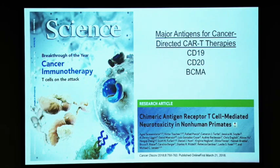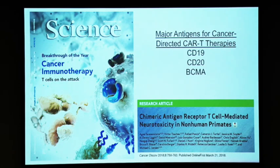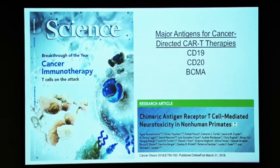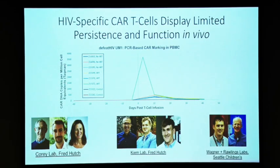Where we stand now is for cancers that express molecules like CD19, CD20, or most recently BCMA, they've been modeled and shown to work very well in the clinic and also modeled in non-human primates, specifically talking about CD20. So there's a lot of precedent for how well these molecules work in large animal models like non-human primates.